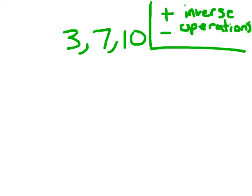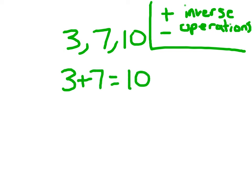I'm going to write down a fact family for the numbers 3, 7, and 10. This is going to be an addition and subtraction fact family, because addition and subtraction are inverse operations. Let's write down that fact family for 3, 7, and 10. 3 plus 7 equals 10, and we'll also have 7 plus 3 equaling 10.